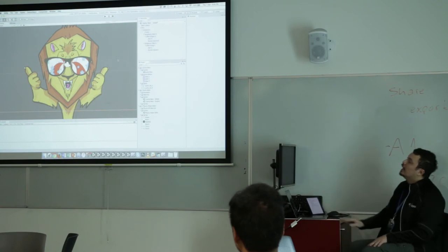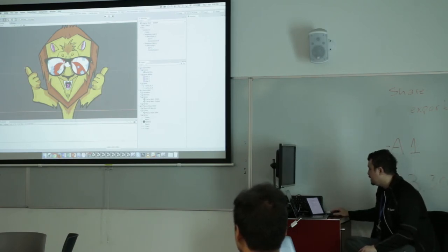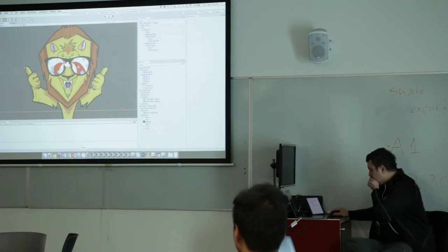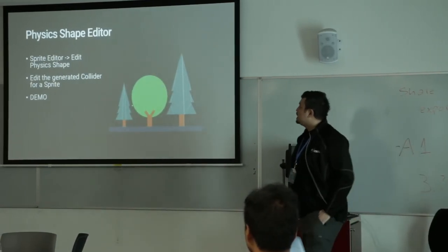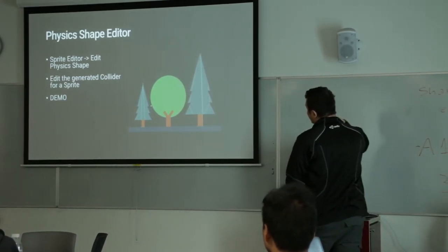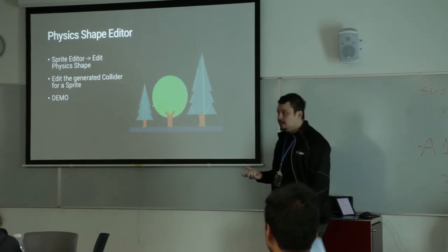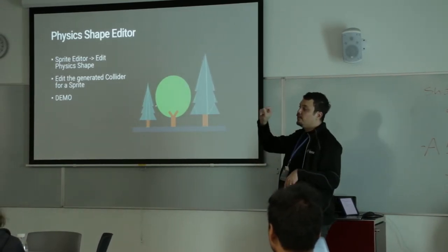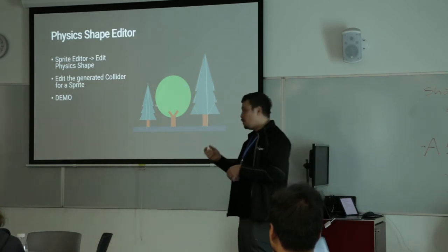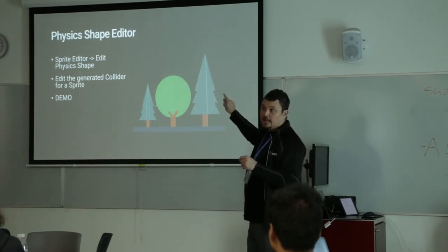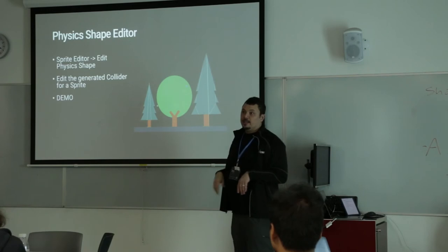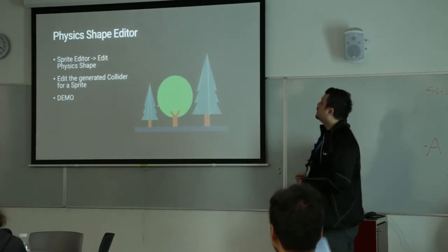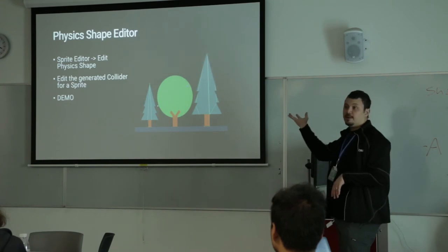Let's look at one more example released in 2017.1 — the physics shape editor. This is very much like the outline editor, except instead of drawing a hint for the sprite mesh, we're adding a hint for the polygon collider. When you've added the right physics shape and then regenerate or reset the collider, or add one for the first time, it's going to pick up on that hint and generate the correct collider for you.